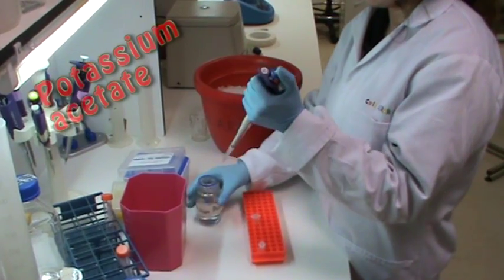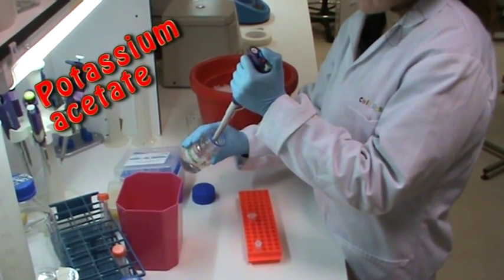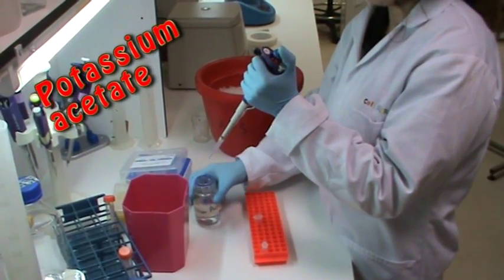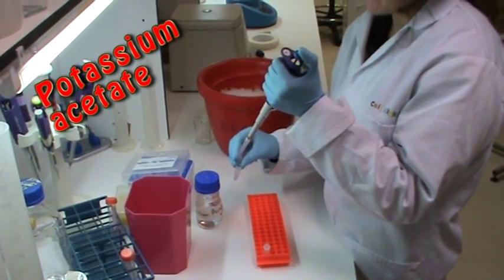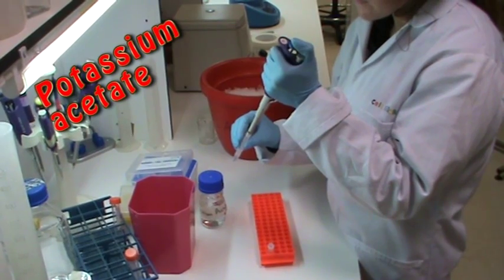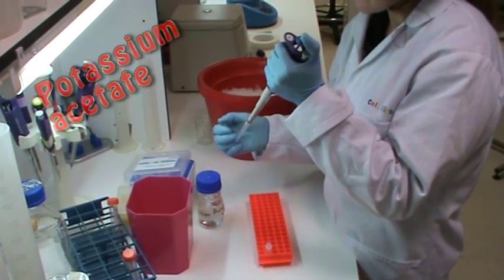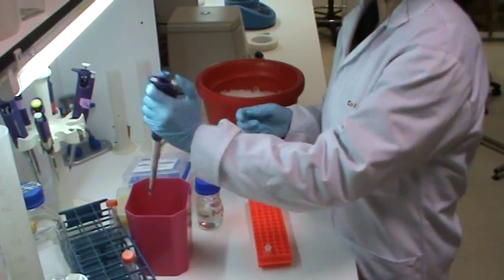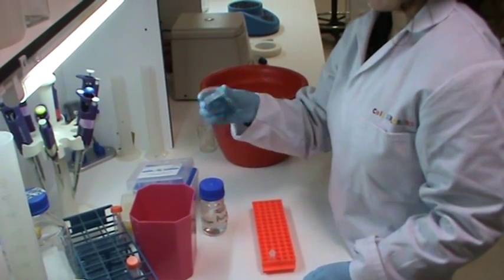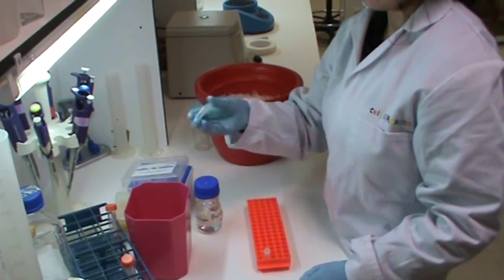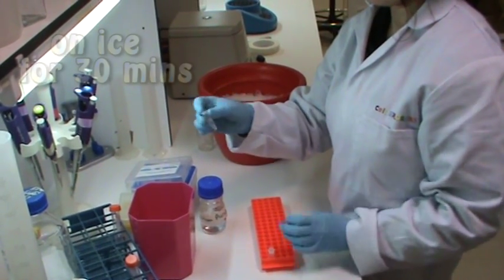I am adding potassium acetate. This is the type of salt which will help remove proteins. I will then mix it well by inversion and place it on ice for 30 minutes. Placing it on ice slows down the breakdown of the DNA and slows any further enzyme activity.